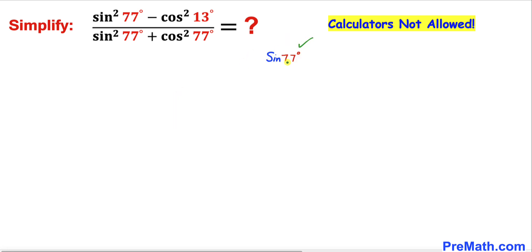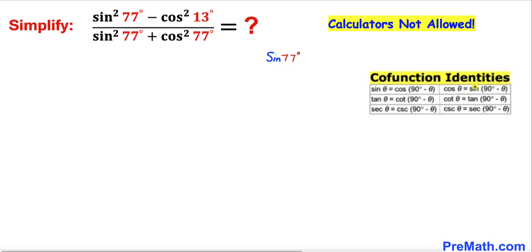Now let's consider sine of 77 degrees. Let's recall these cofunction identities and focus on this one: sine of theta equals cosine of 90 minus theta. If I call theta as 77 degrees, then our sine of 77 degrees could be written as cosine of 90 minus 77 degrees.